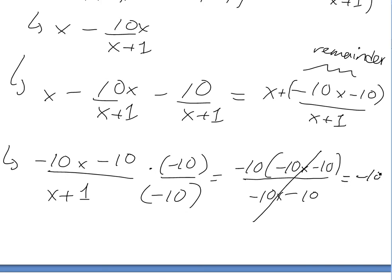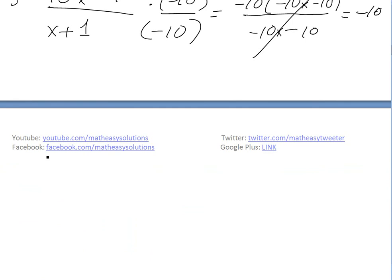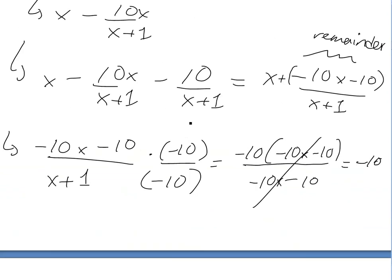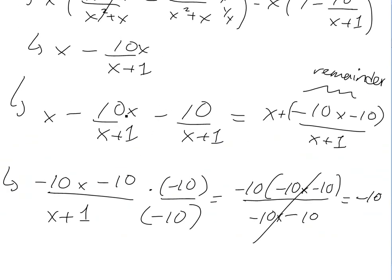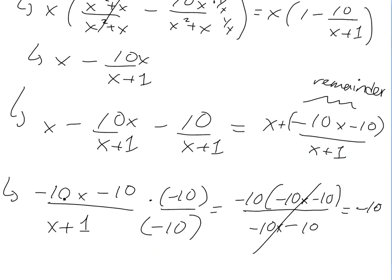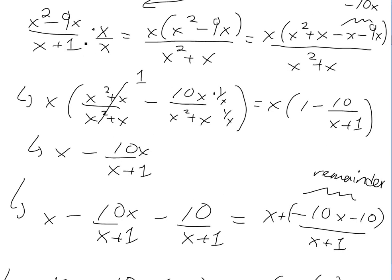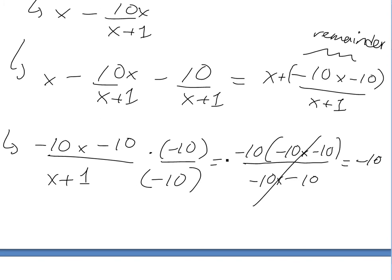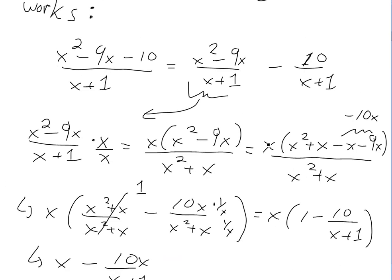So putting this all together, x squared minus 9x minus 10 over x plus 1 equals x minus 10. You can see the steps of long division correspond exactly to what we're doing algebraically — expanding, making terms match, and canceling. First we multiplied by x over x, then by negative 10 over negative 10, just so we could cancel, and that's how polynomial long division works.